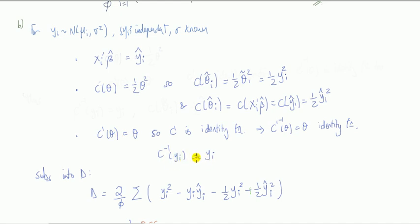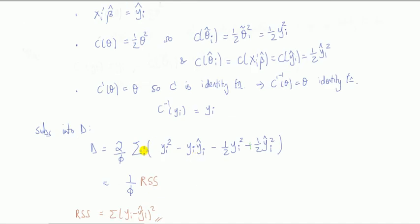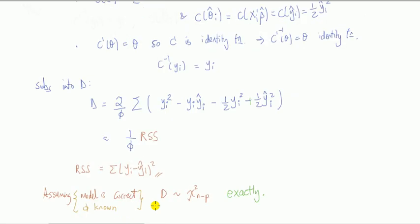Substituting these three things into the deviance, I have this expression. That's a plus there now. But notice this here is the residual sum of squares. Now you can see, like, how some people have defined it. If you defined the deviance to be this D times phi and call that the deviance, then that is exactly the residual sum of squares.